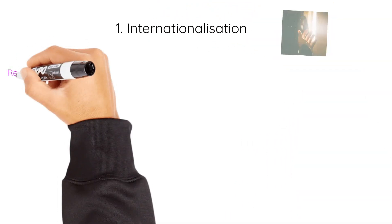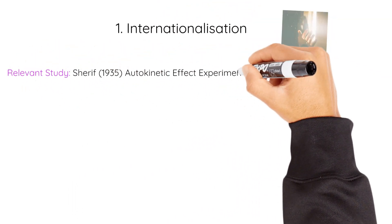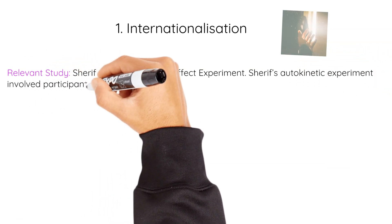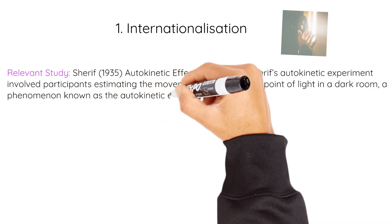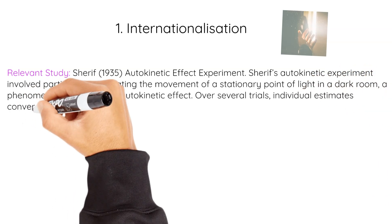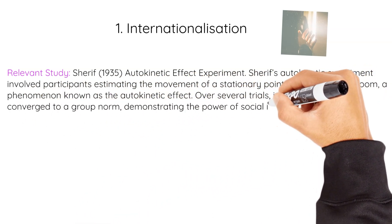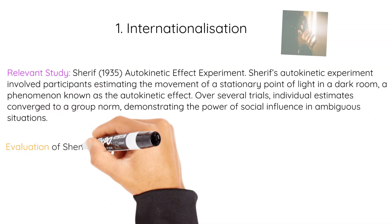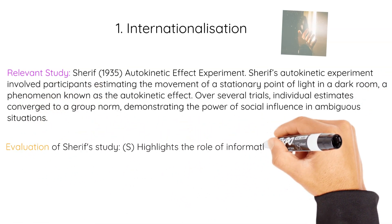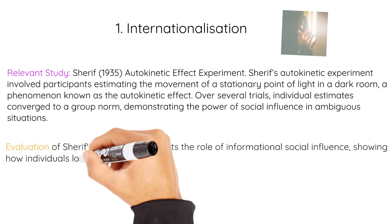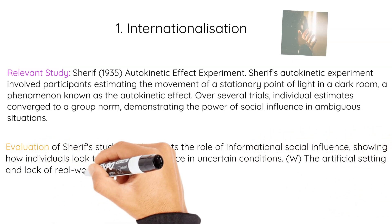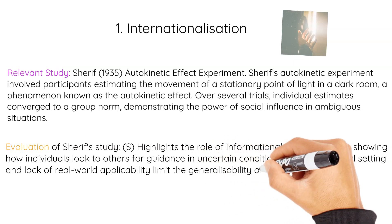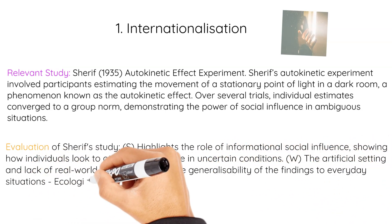A relevant study that demonstrates this is Sherif's 1935 Autokinetic Effect Experiment. Sherif's autokinetic experiment involved participants estimating the movement of a stationary light point in a dark room, a phenomenon known as the autokinetic effect. Over several trials, individual estimates converged to a group norm, demonstrating the power of social influence in ambiguous situations. Strength: it highlights the role of informational social influence, showing how individuals look to others for guidance in uncertain conditions. Weakness: the artificial setting and lack of real-world applicability limit the generalizability of the findings — ecological validity.